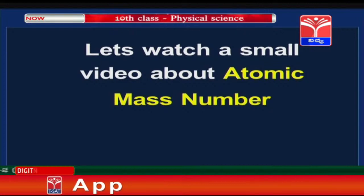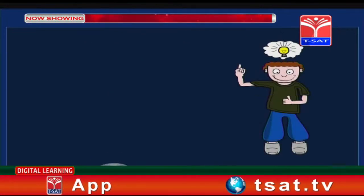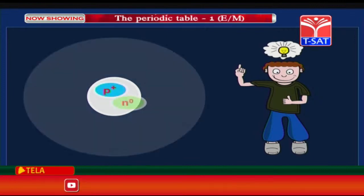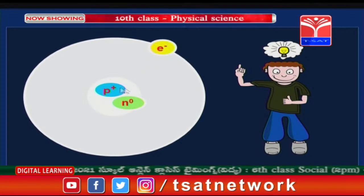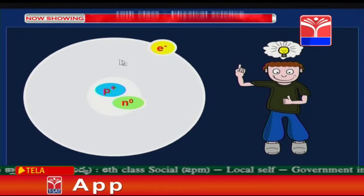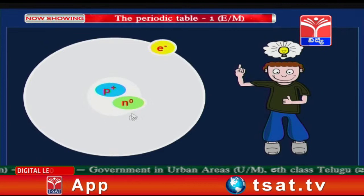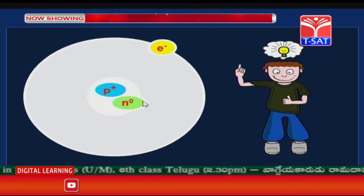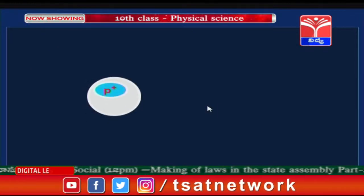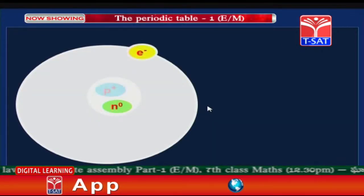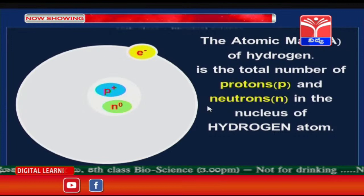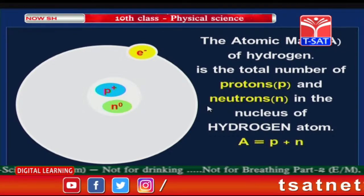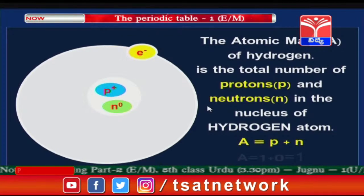We will take the example of the hydrogen atom. In the nucleus of the hydrogen atom, there is one proton and one neutron, and one electron is revolving around it. Inside the nucleus, protons and neutrons are present. Their sum — the number of protons and neutrons — is the mass number. The atomic mass of hydrogen is the total number of protons and neutrons in the nucleus, that is, A = P + N (number of protons plus number of neutrons).